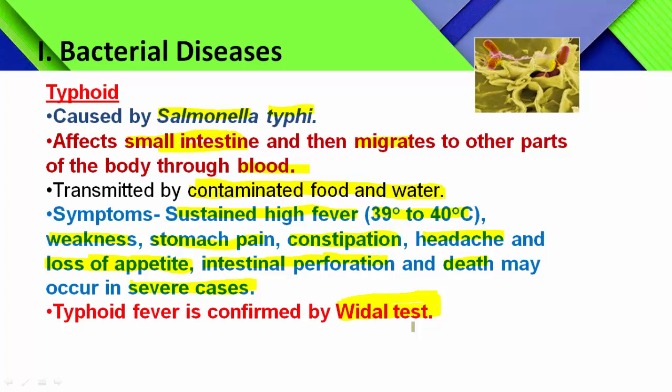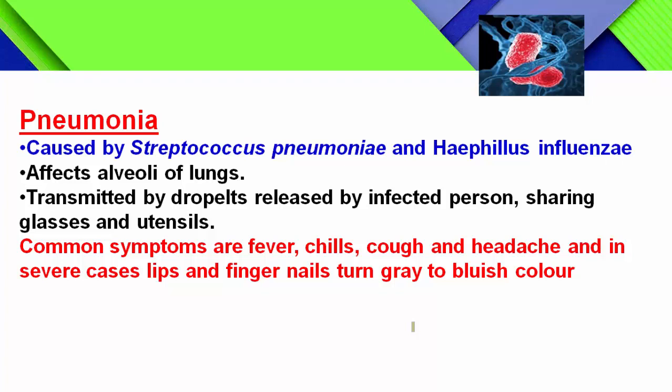Name the bacterial diseases along with their causal organisms you have studied. The causal organism for typhoid is Salmonella typhi. The second bacterial disease is pneumonia. Pneumonia — do not pronounce the P — is also a bacterial disease caused by Streptococcus pneumoniae and Haemophilus influenzae.